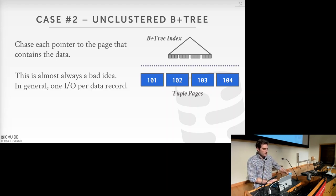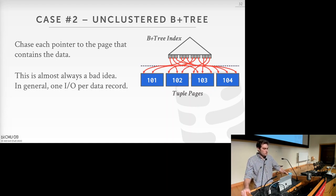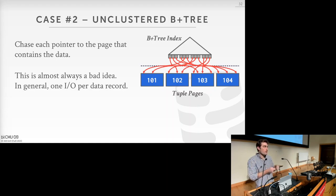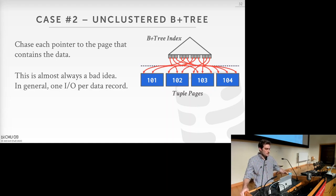For an unclustered B+ tree, you end up with really bad I/O access patterns — random access — because pointers from the index point all over the base data. In general, this results in one disk I/O per record in the B+ tree, which is very expensive. The external merge sort is more predictable and controllable in how many passes and how much disk I/O it requires.